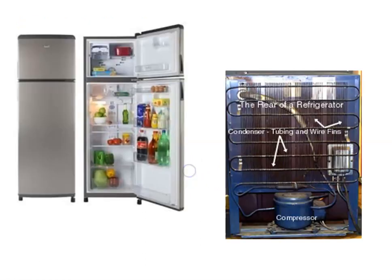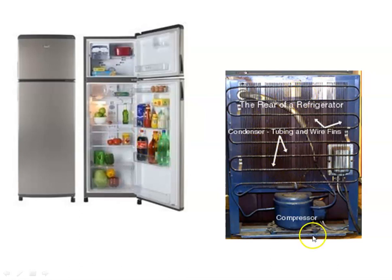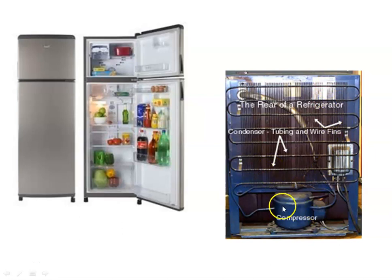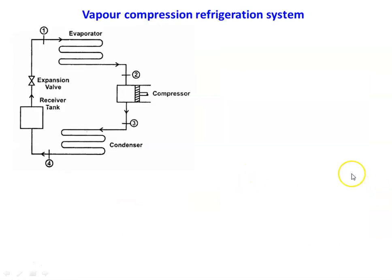In a household refrigerator, the food compartment and freezer are inside. Inside the equipment there is an evaporator coil. On the back side of the refrigerator, you find the compressor and the black color tubes, which are the condenser tubes. Vertical strips of material called fins are used for effective heat removal in the condenser. There is also a capillary tube as the expansion device. The compressor, condenser, and expander are on the outside, while the evaporator is inside the food compartment.